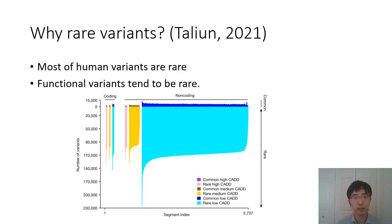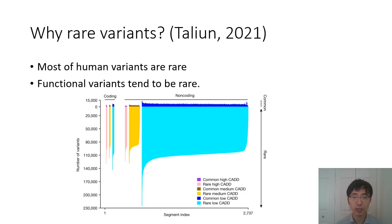Why are we interested in rare variants? This is because most human variants are very rare, and also functional variants tend to be rare. You can find these two conclusions through this figure, which is based on the 1000 Genomes data. If you look at the number of variants in common versus rare variants, we can find that rare variants have much more in both coding and non-coding regions.